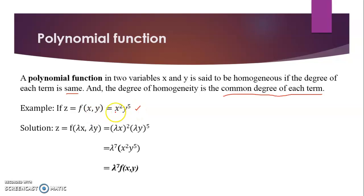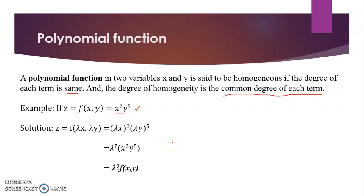Now here is another example of a polynomial function where the function equals x squared times y raised to power 5. Again we multiply each variable with lambda, giving us lambda squared times x squared times lambda raised to power 5 times y raised to power 5. The power of lambda is 7, that is 2 plus 5. So for a polynomial function in multiplication form, the lambda value is the sum of the powers of both variables, and the degree of homogeneity is 7. Polynomial functions are those whose powers are positive — not negative and not in decimal form.